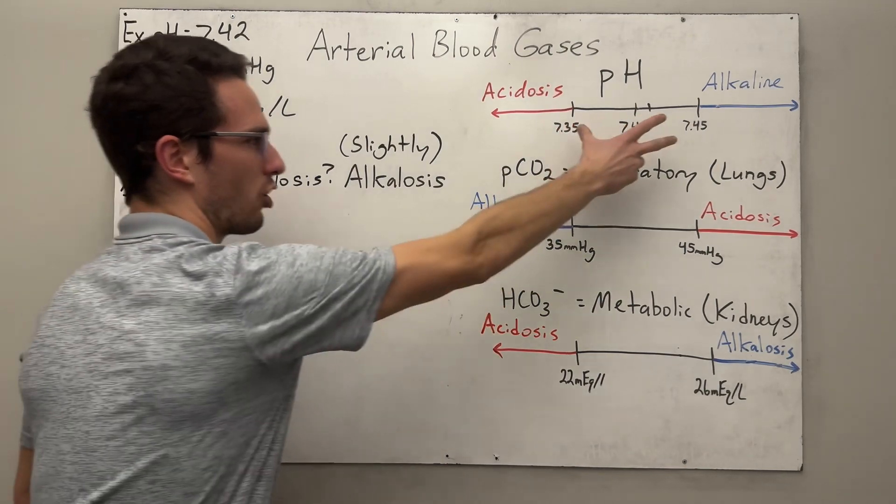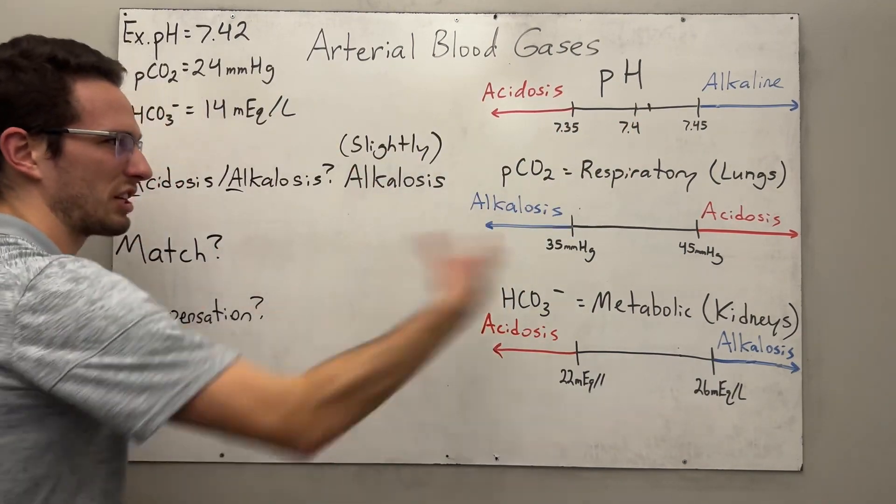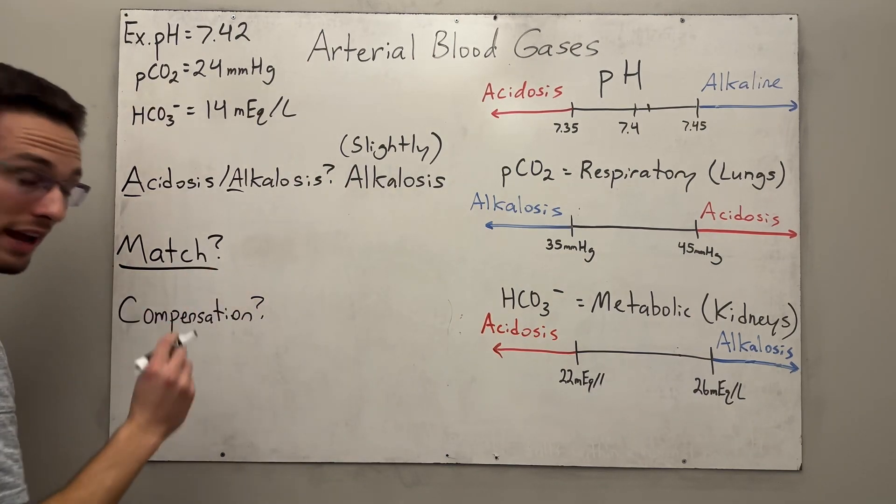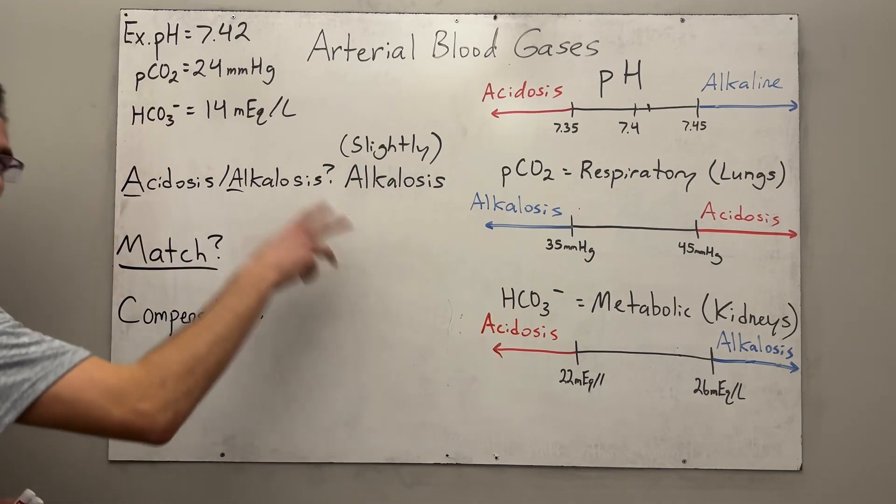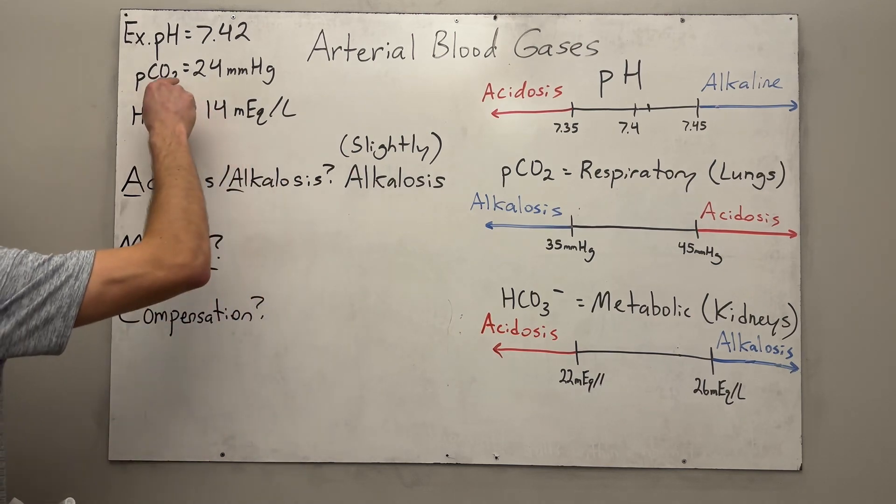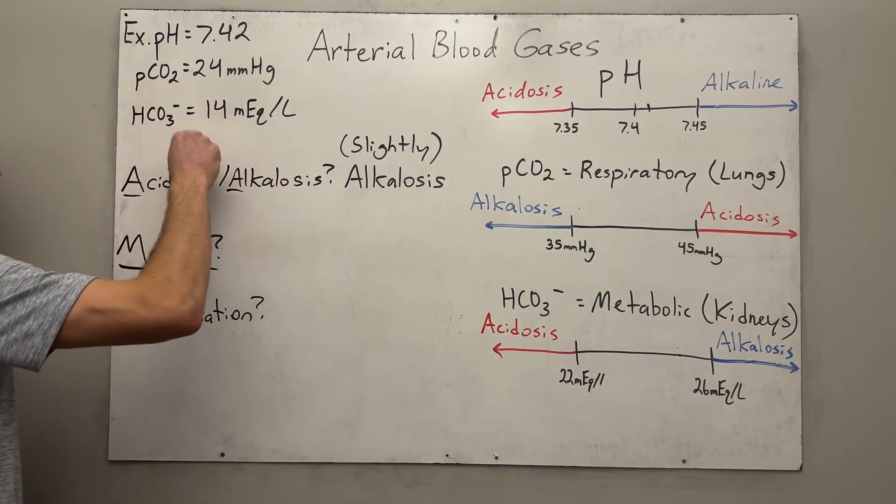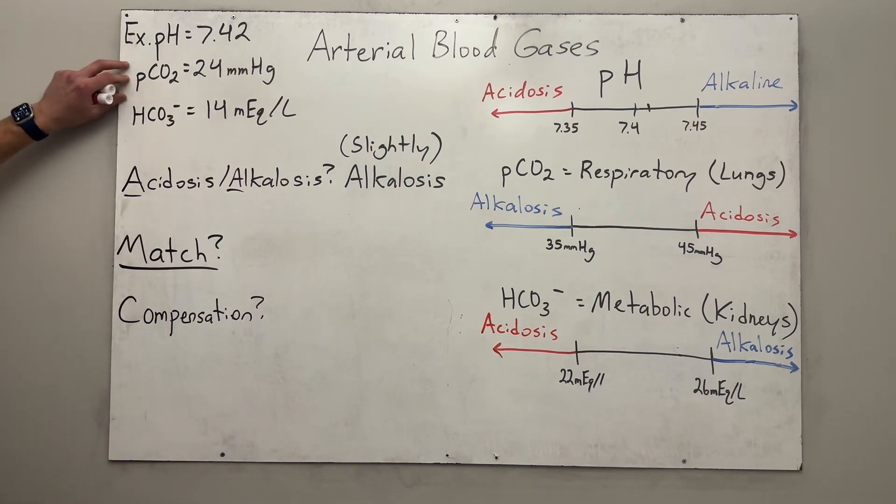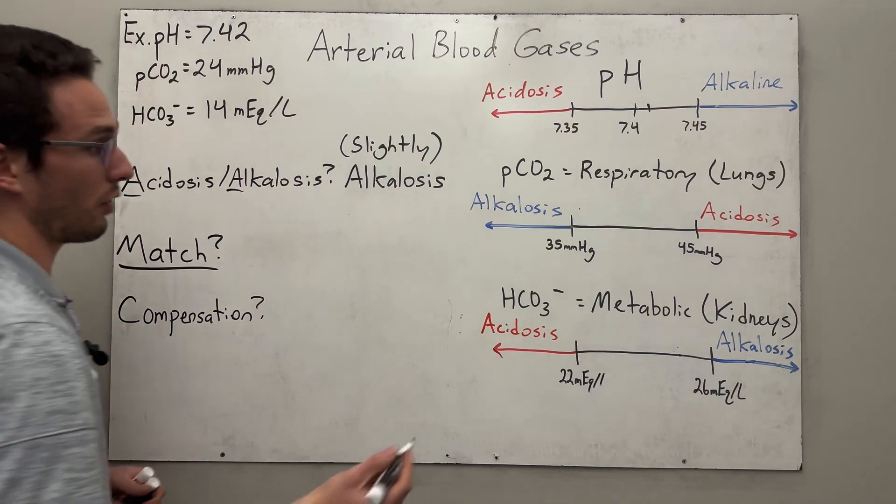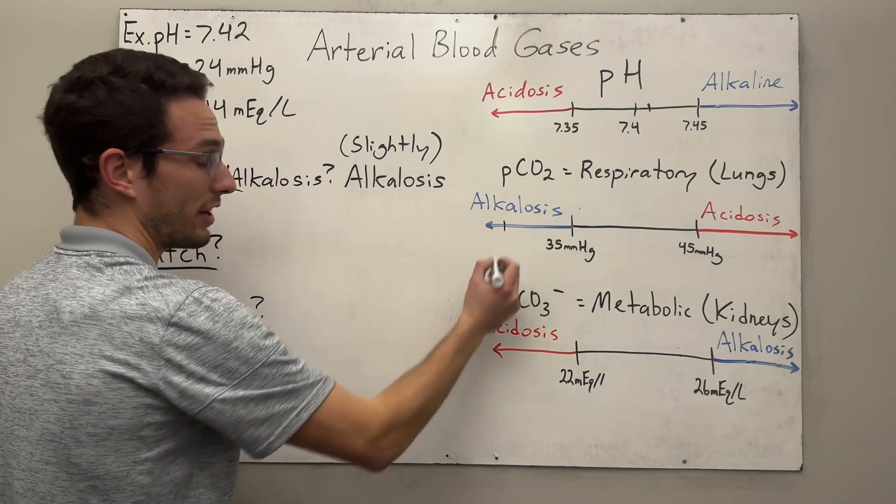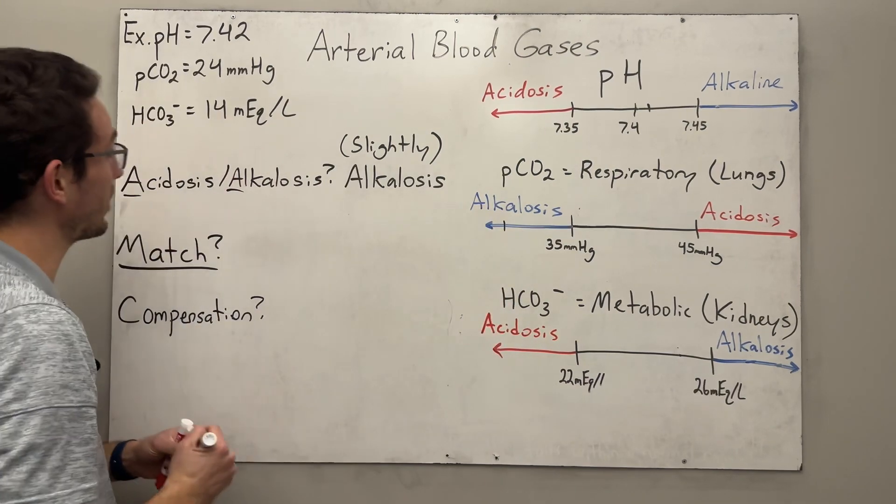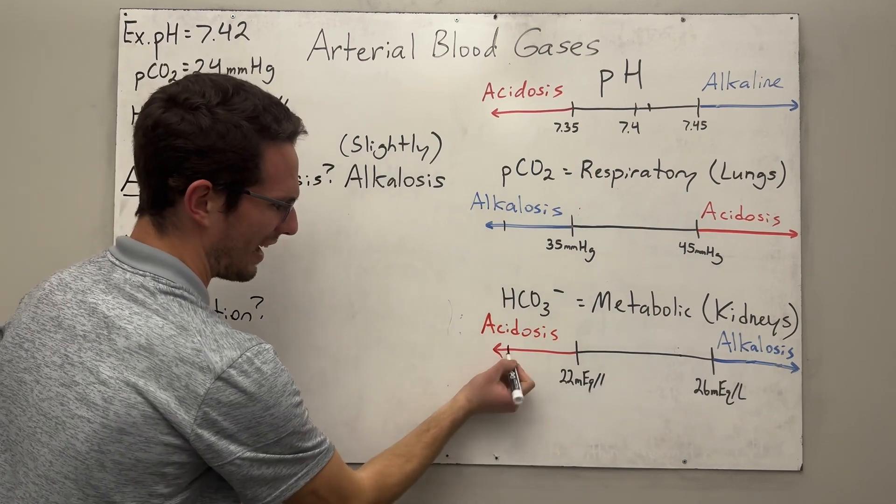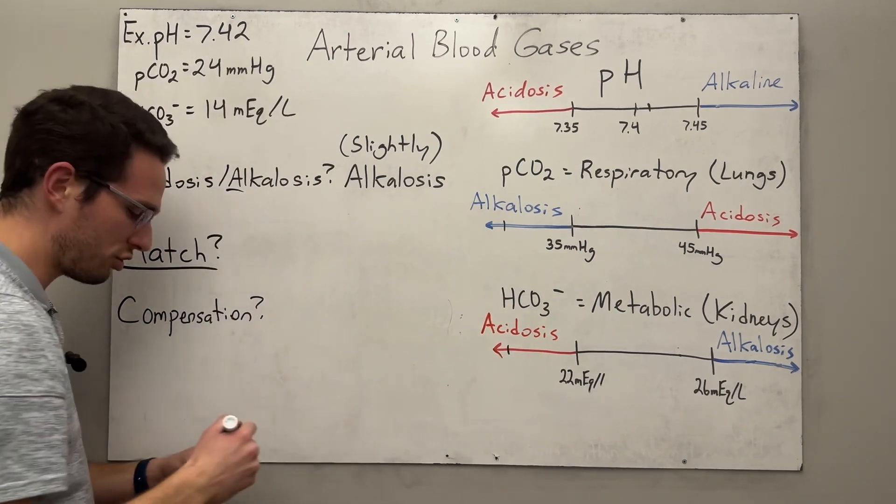So now that it falls within that normal range, let's see if there's something actually pushing it one way or another. So if we're slightly alkalotic, now we're looking at the match. So which would match alkalosis state? Would it be the carbon dioxide or would it be the bicarbonate? Well, let's look at this. So carbon dioxide is 24. That would fall very, very low on this scale. So we're very alkalotic. And if we look at the bicarbonate, we've got 14, which would indicate that we're actually acidotic. We're very low. So what's going on here?